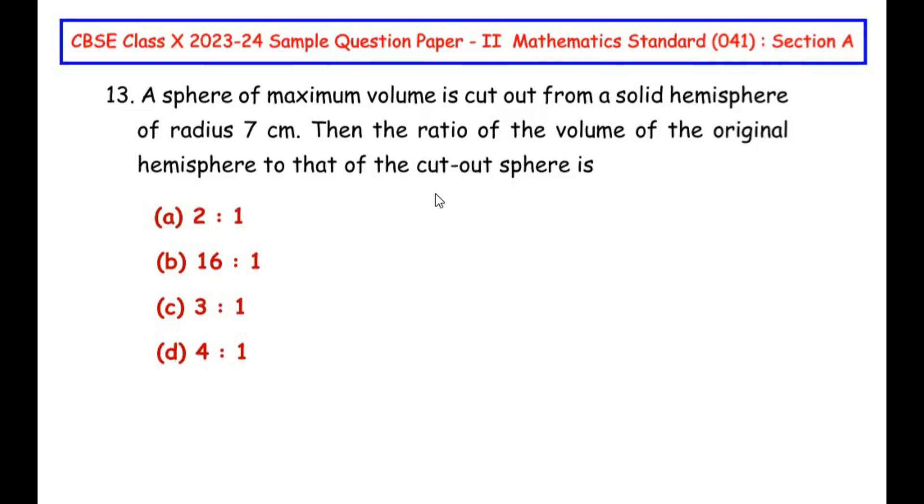Now this question is from the surface areas and volumes chapter. A sphere of maximum volume is cut out from a solid hemisphere of radius 7 cm. The ratio of the volume of original hemisphere to that of the cutout sphere is?